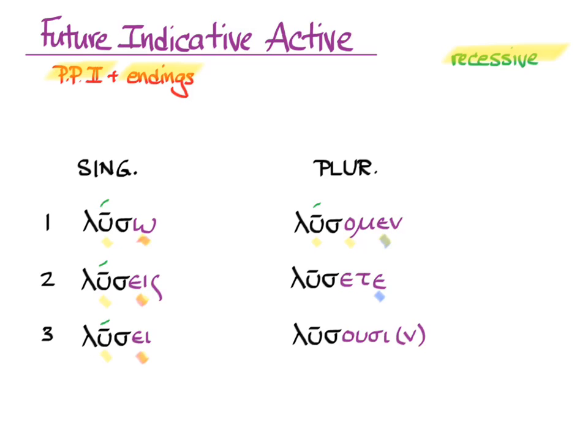The same happens in the second person plural. Epsilon is short, so that's a short last syllable, and we count one, two, three back to the acute on the third to last syllable. And finally, third person plural — that's a short iota, so short: one, two, three, and the acute.